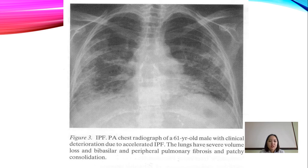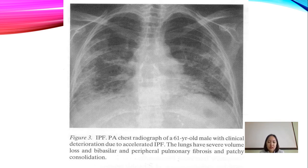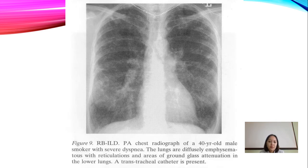On the first chest X-ray you will find severe volume loss in the lower zones of the lung, and bilateral basilar and peripheral pulmonary fibrosis appearing as light-dark opacity, with patchy consolidation — you do not see the sinuses. The second chest X-ray shows diffuse emphysematous changes with reticulation and areas of ground-glass attenuation in the lower lungs.